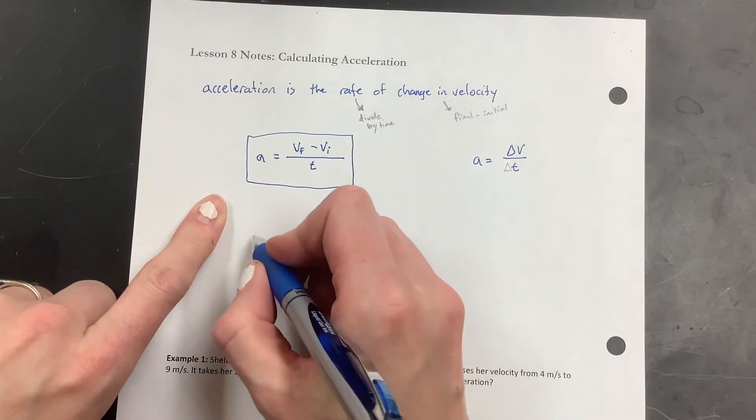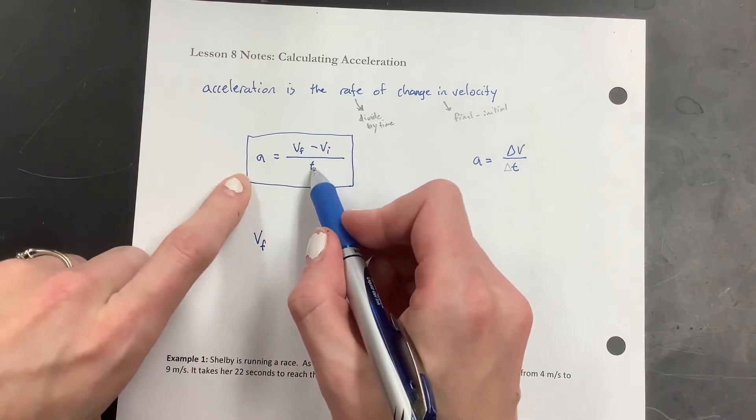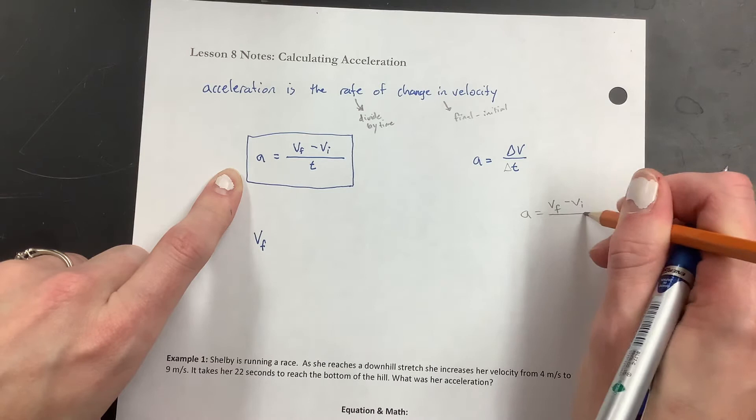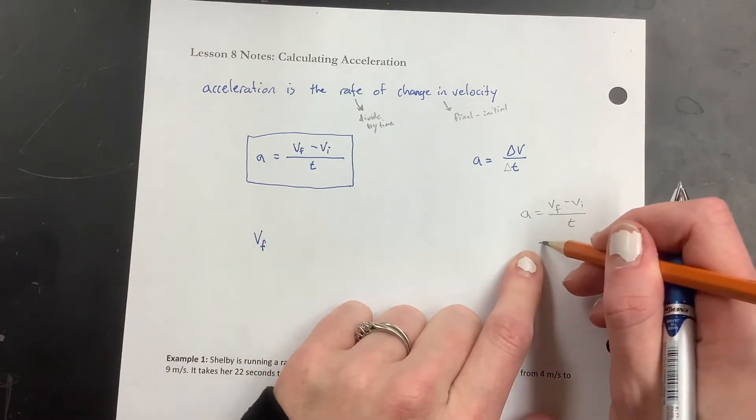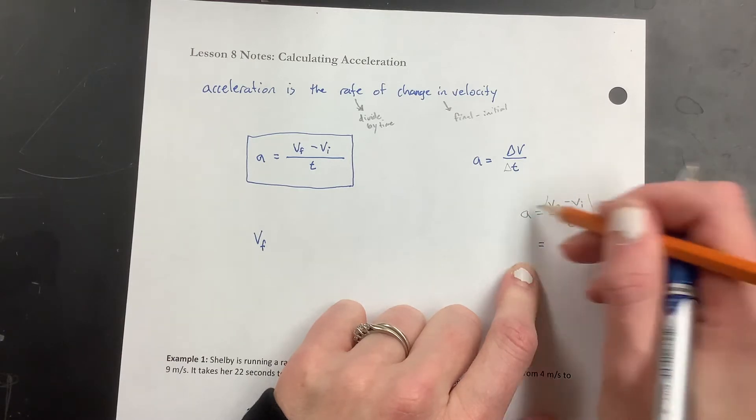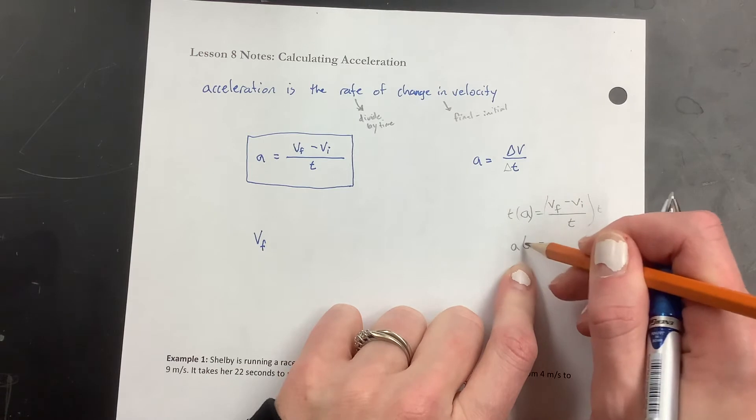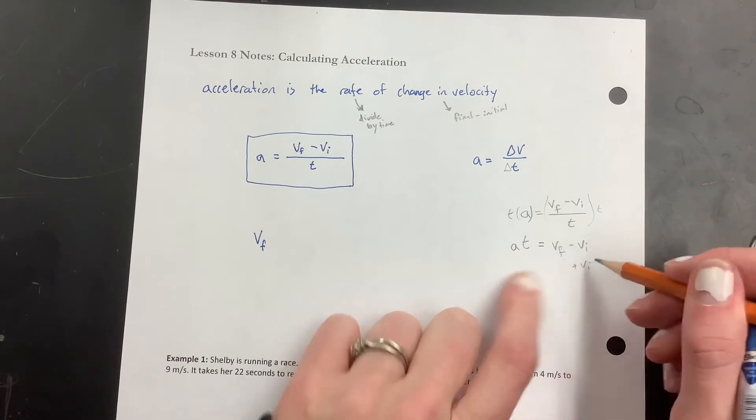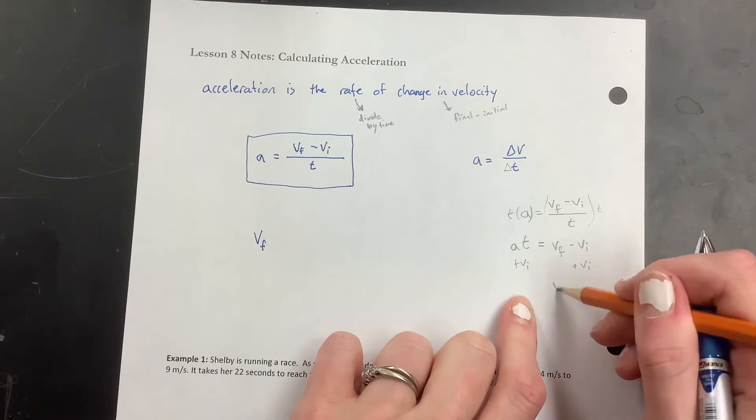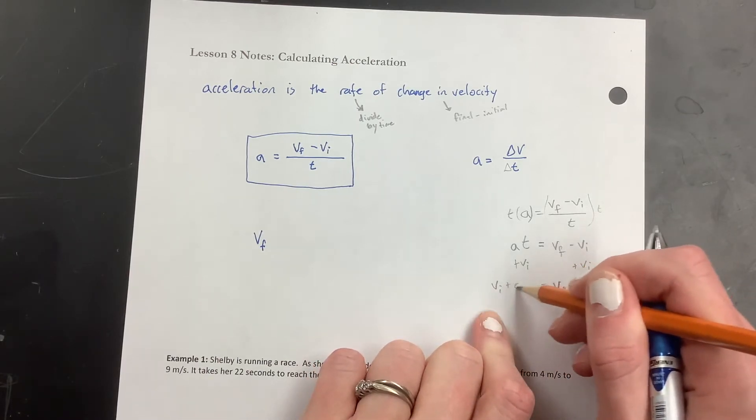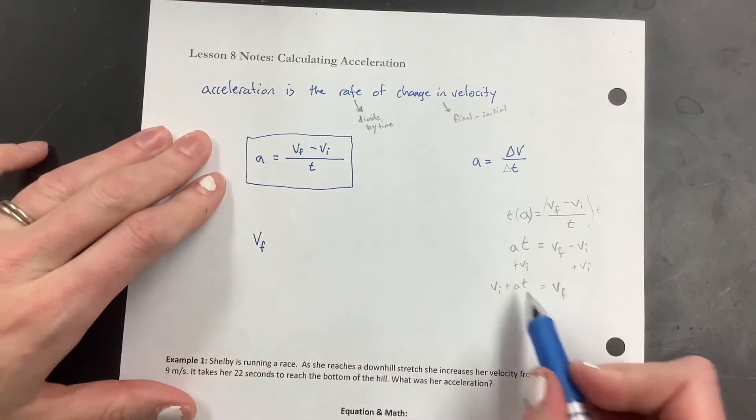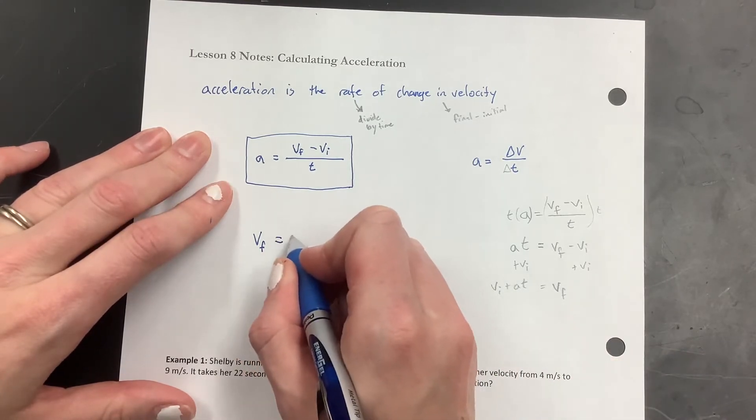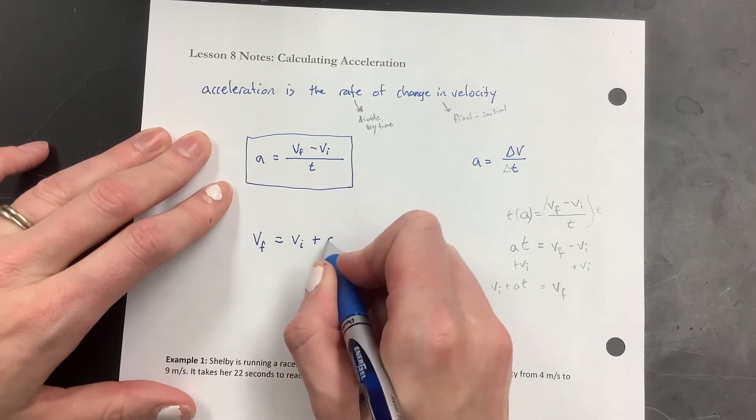Sometimes we might want to find the final velocity. And this one looks a little different. So if we take A equals VF minus VI over T. And if you don't like algebra, looking away right now might be helpful. So we're going to multiply both sides by T, so we get A times T. And then we have VF minus VI. And then to get VF by itself, we need to add VI to both sides. And so VF is VI plus AT. I write my T with a little curly on its tail because sometimes I get my plus signs and my T's mixed up.